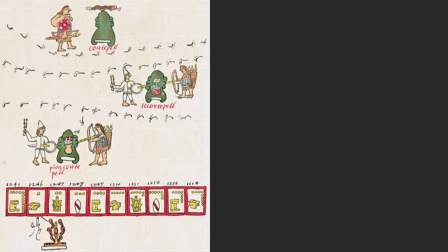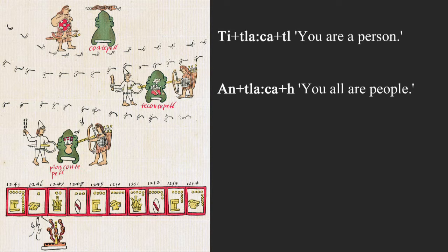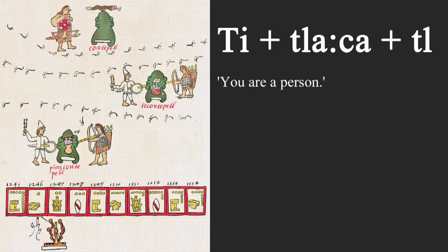Returning to an example from the last episode, let's compare the singular and plural forms for the noun tlakatl (person) and the verb ne'nemi (walk). Notice how the noun and verb receive similar prefixes and suffixes for person and number. The plural sets are identical here — the noun and verb take the same prefixes and a glottal suffix. We will return to verbs in the next episode.